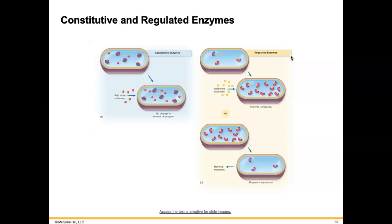So constitutive enzymes are in constant numbers regardless of how much substrate is available. A regulated enzyme is regulated based on how much substrate is available — if there's a little bit of substrate available, the enzymes will be repressed, and if there's a lot of substrate available, the enzymes will be induced to be made.